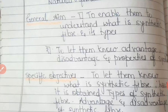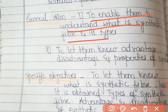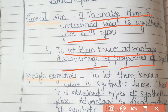For general aim, we have to write what we want to teach to students. We want to teach them about synthetic fiber and its types — to enable them to understand what synthetic fiber is and its types. We want to let them know what fiber is and how it is made. Since they already learned that in Class 7, today we are going to tell them about synthetic fiber — handmade fiber made by humans — and also the advantages, disadvantages, and properties of synthetic fiber.